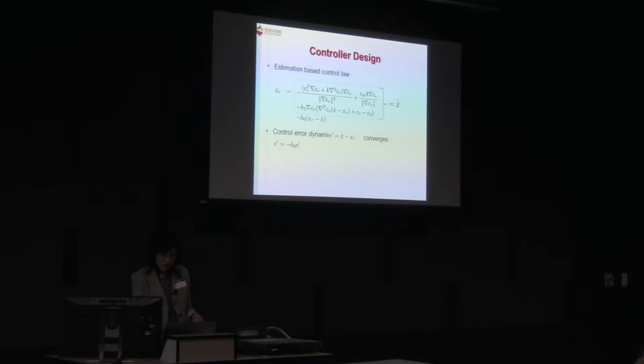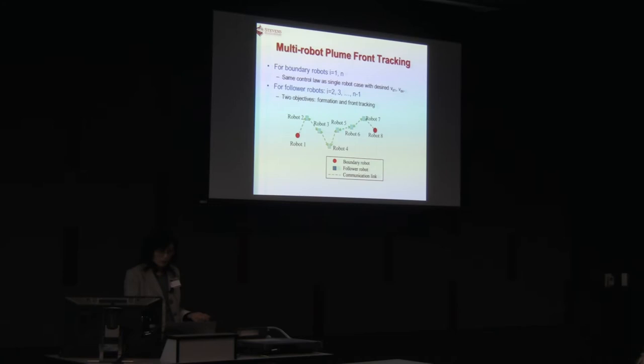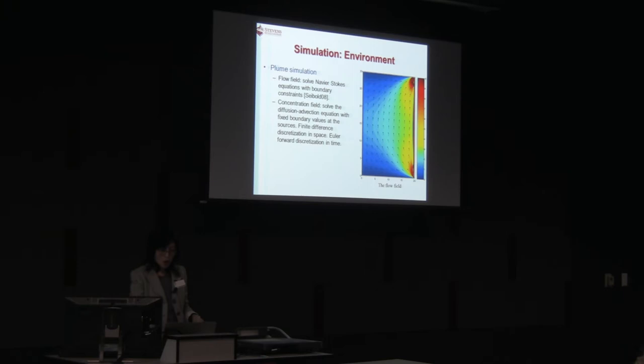For multi-robot, for the first and the last robot, it's the same controller as a single robot. And for the other robots, it has a formation controller first, so that they can evenly distribute between the first and the last one, where the opposite direction on the plume front. So they were neat. This is the control law for the follower robot U_i. I saw the chair stand up, so I may have only a few minutes left.